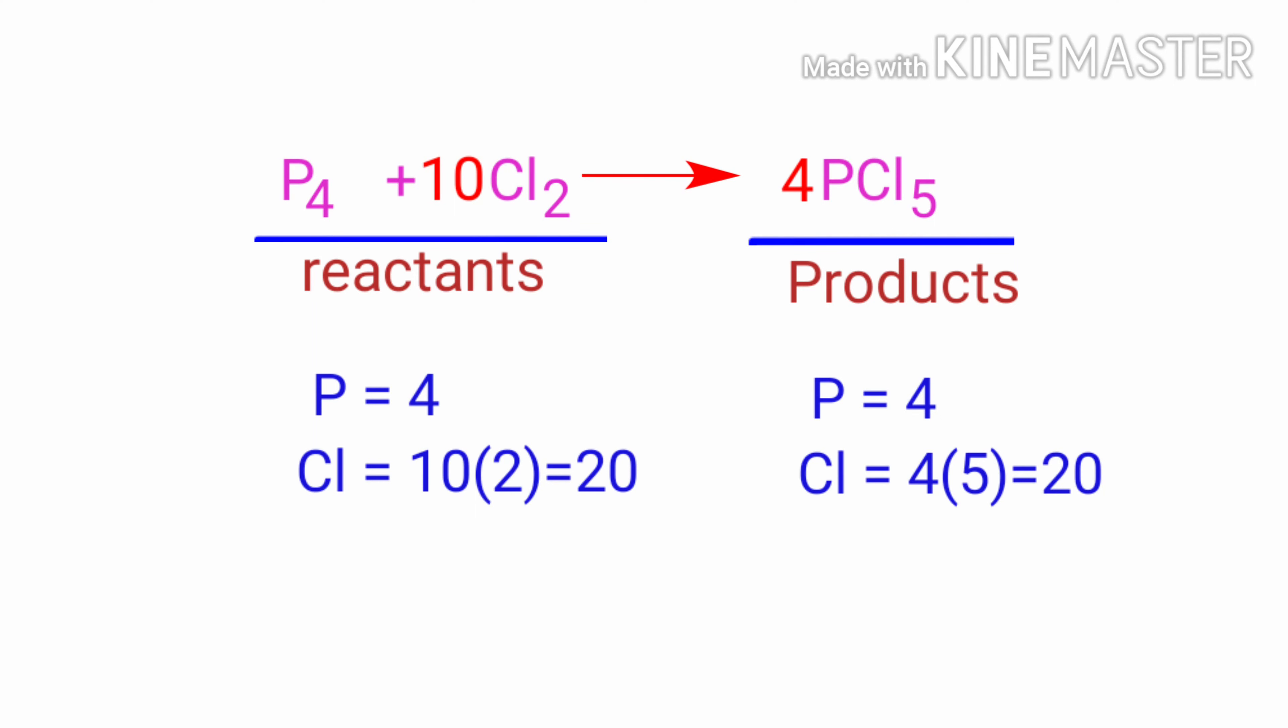The equation is now balanced. There are 4 Phosphorus atoms and 20 Chlorine atoms on both sides.